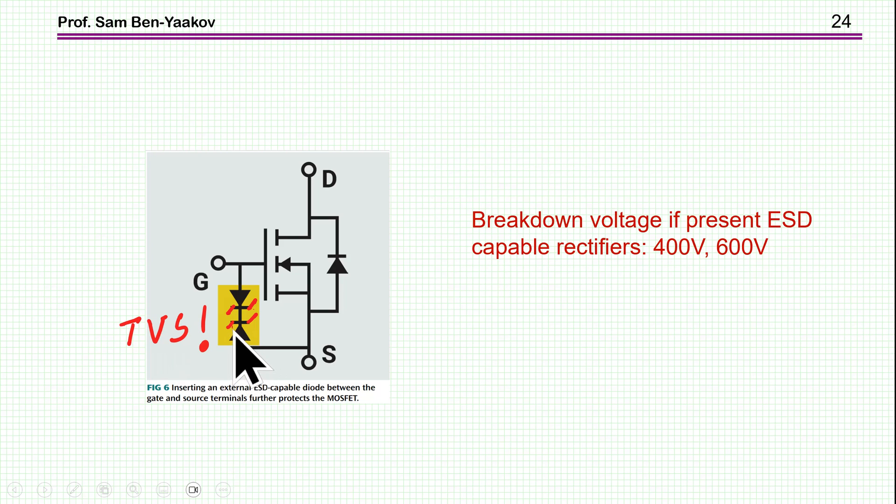So they have to be drawn as the TVSs and there will be two TVSs back to back. And this, of course, could be the case. But there's nothing new about that. It has nothing to do with the ESD capable rectifier.